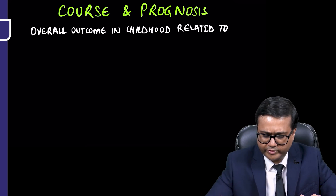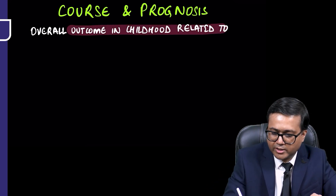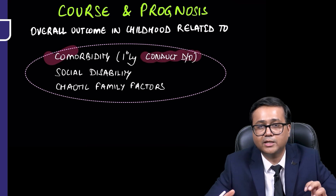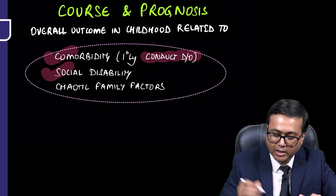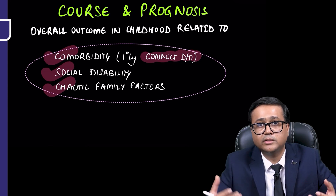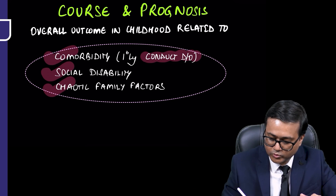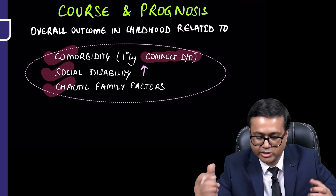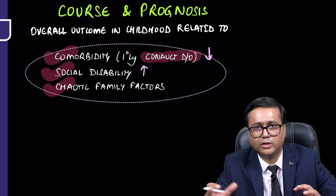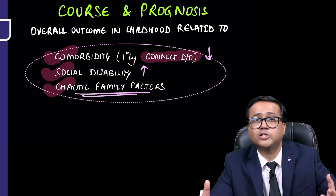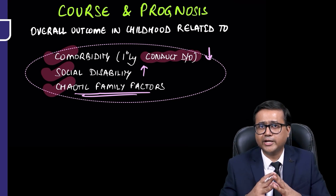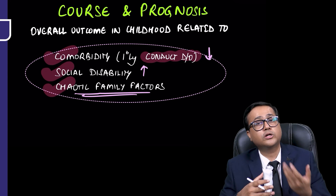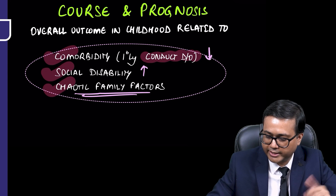The overall outcome in children is related to factors such as comorbidity — especially conduct disorder, which suggests poor prognosis — as well as social disability and chaotic family factors. Since these are known poor-outcome factors, we may try to improve social functioning, reduce conduct disorder symptoms like aggression, and improve the family situation. Taking a detailed history and proper assessment is very important, as identifying and targeting these factors can change the outcome.